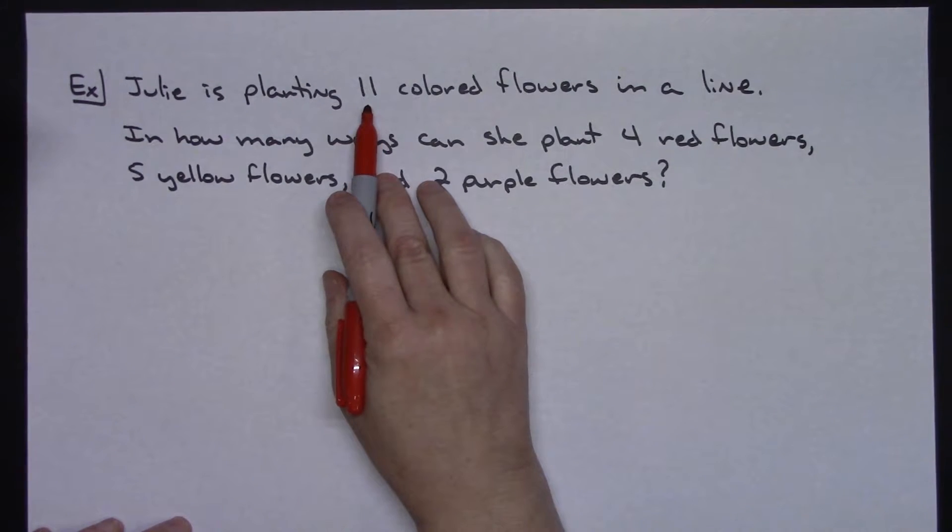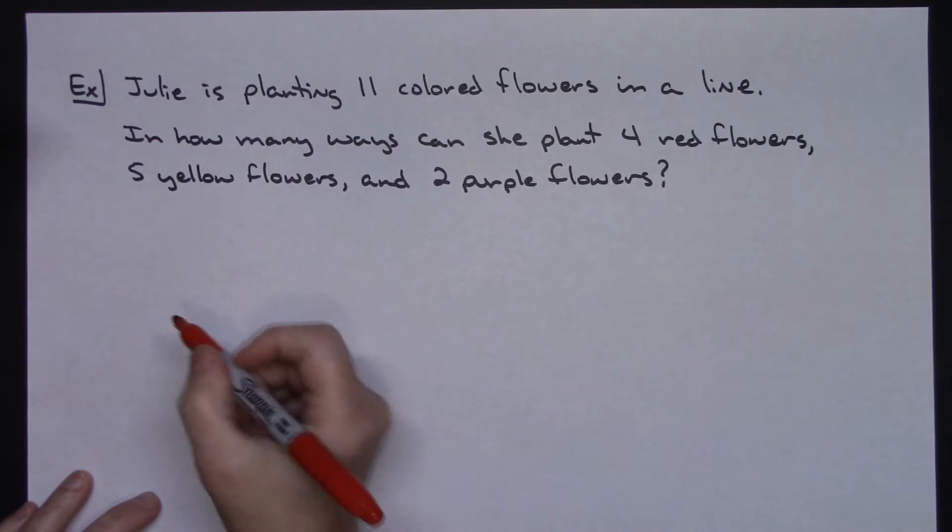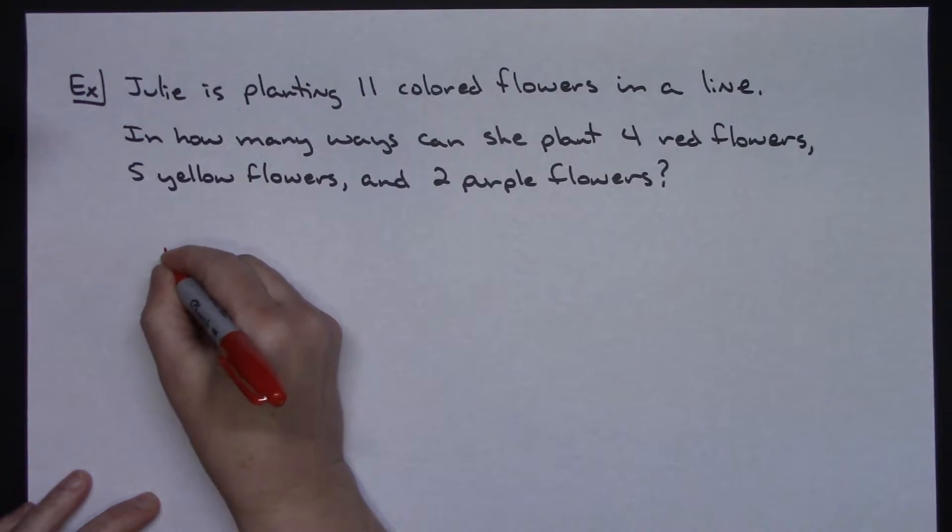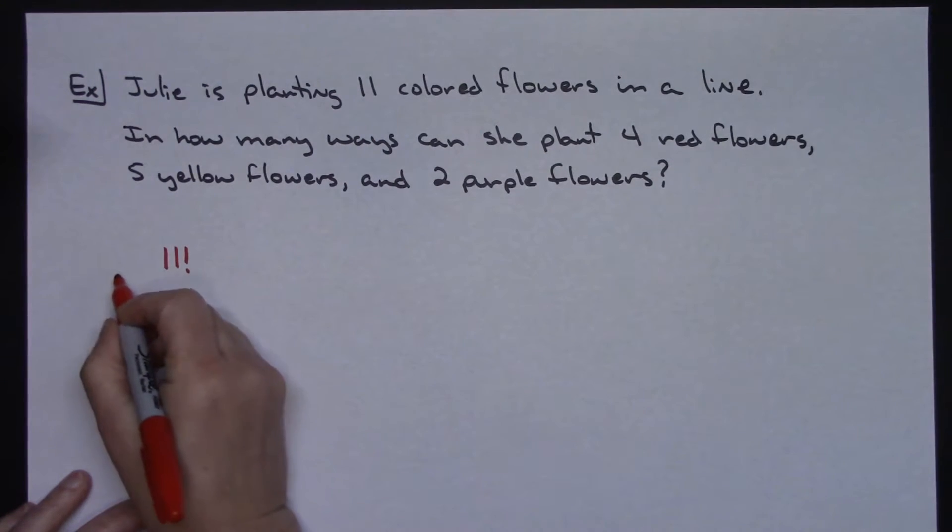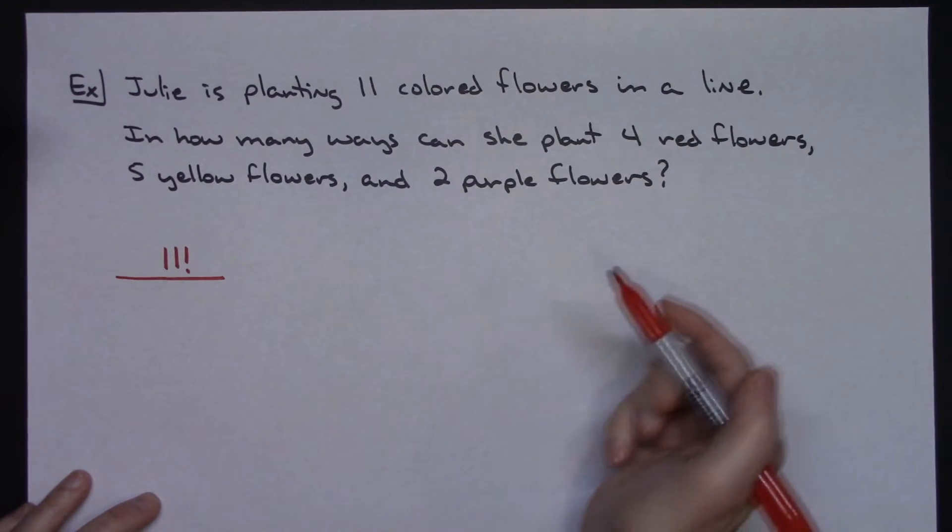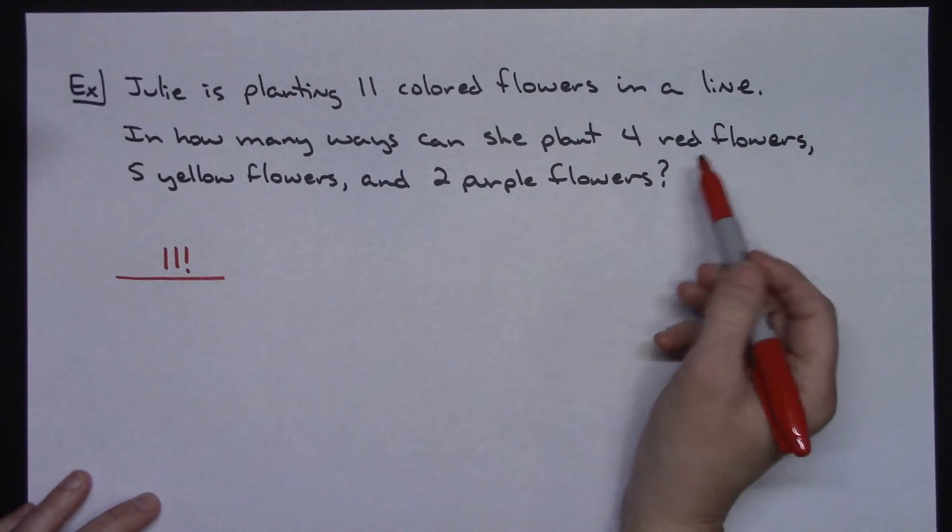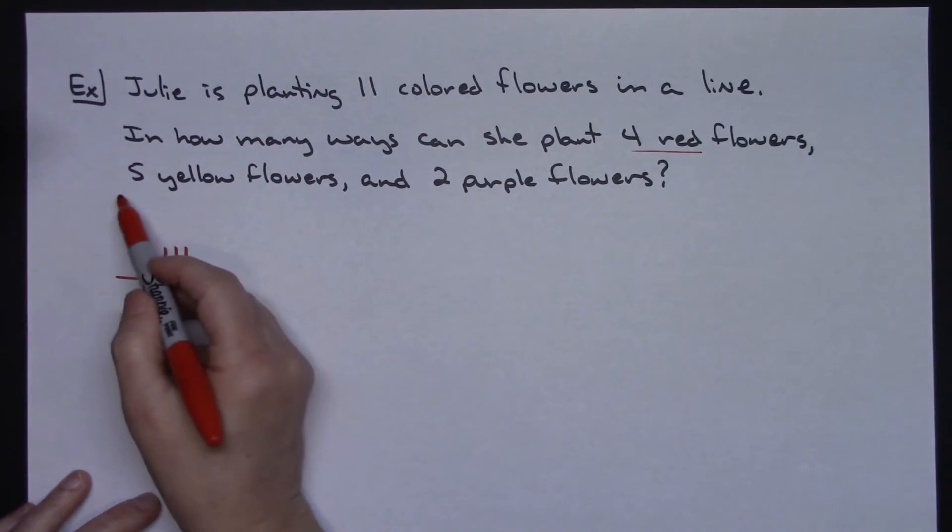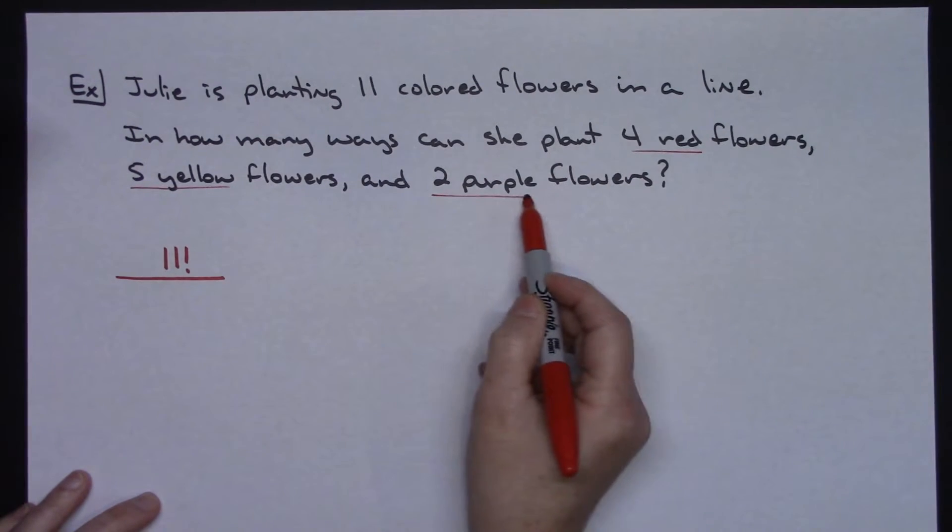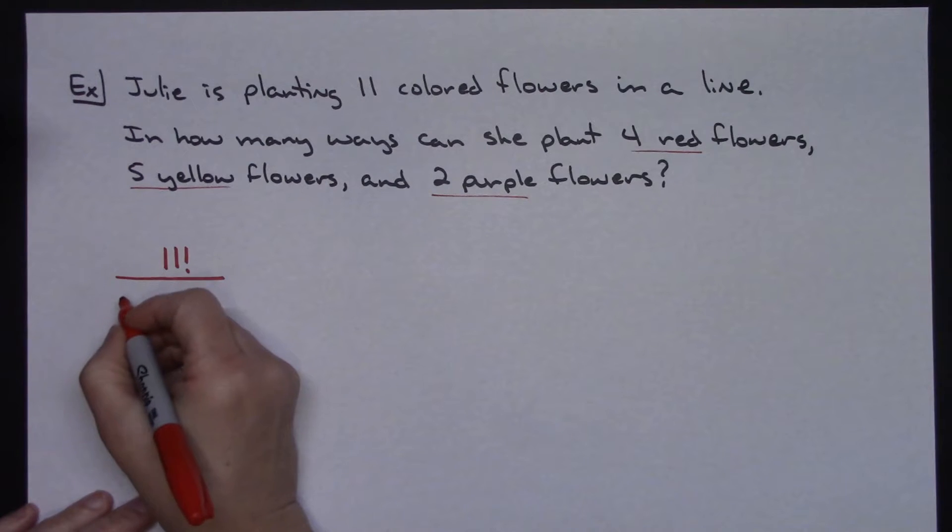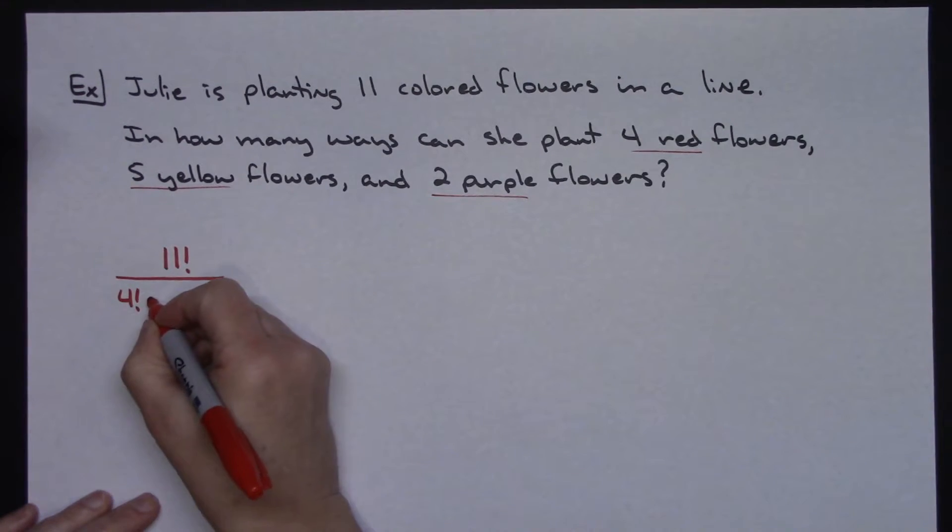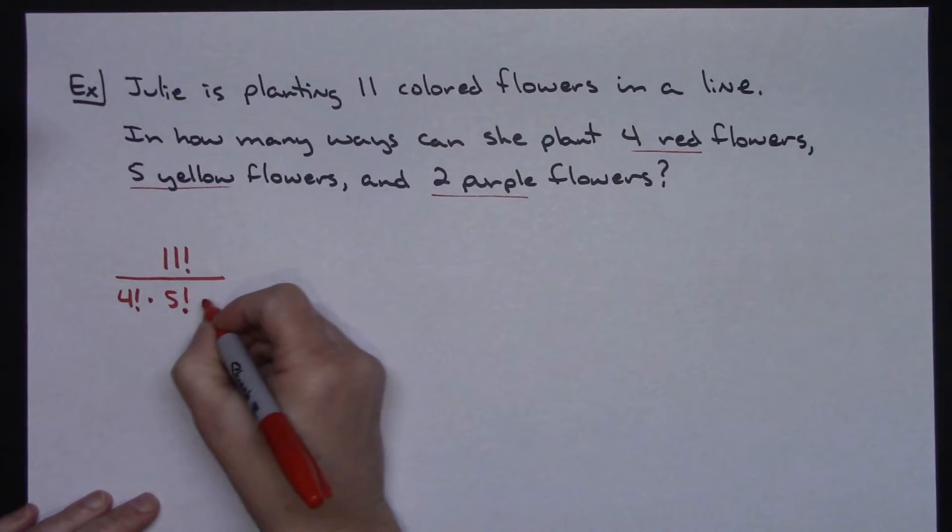I've got a total of 11 flowers, so that's going to be my 11 factorial on top. Now I'm going to take each one of those three different colored flowers. So I've got 4 red, I've got 5 yellow, and I've got 2 purple. So I need a 4 factorial times a 5 factorial times 2 factorial on the bottom.